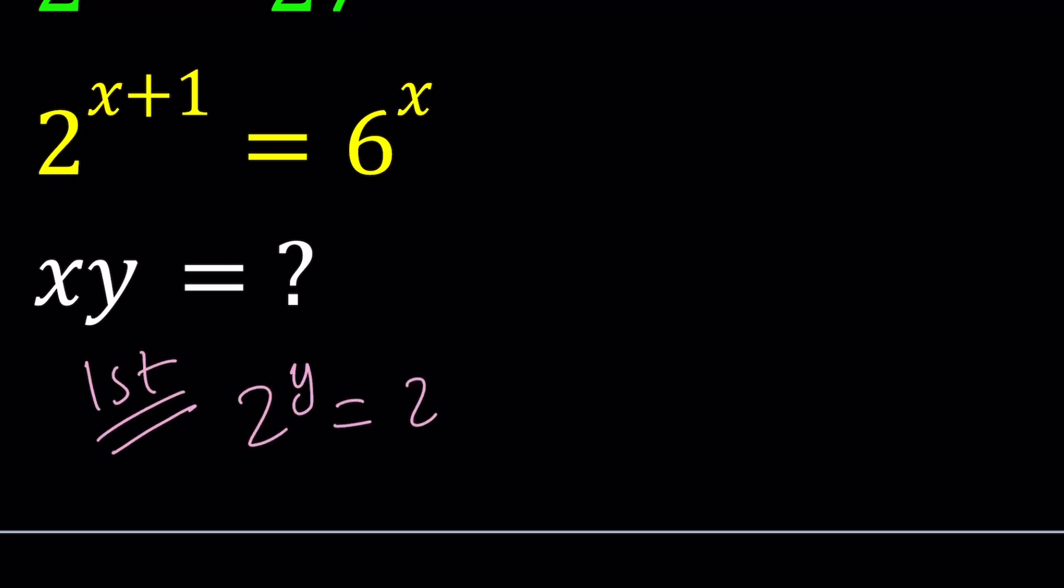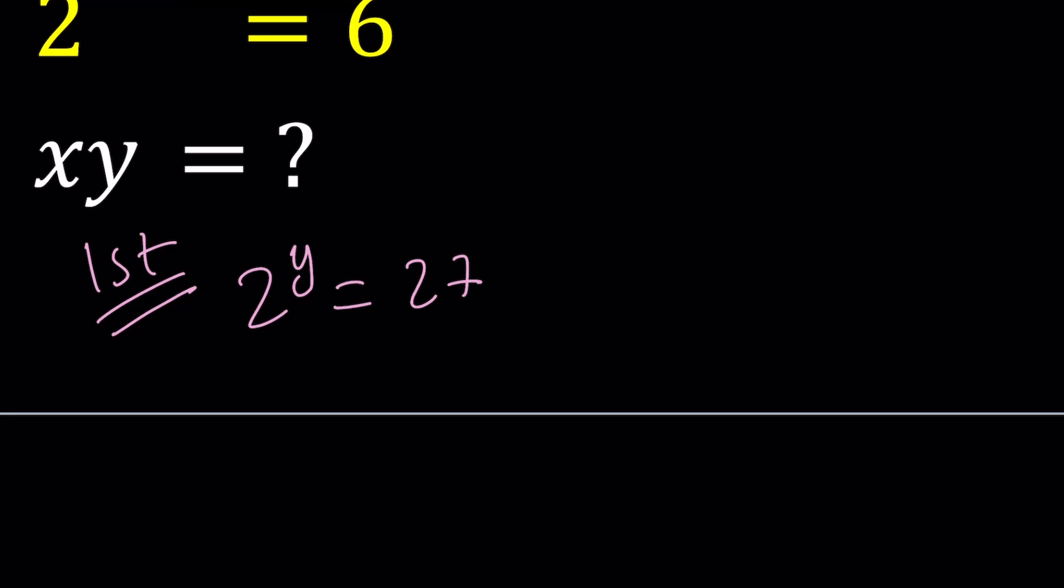We're going to be using logs for our first method. Since we have 2 to the power Y equals 27, we can go ahead and log both sides with the natural log. I would probably use that one.